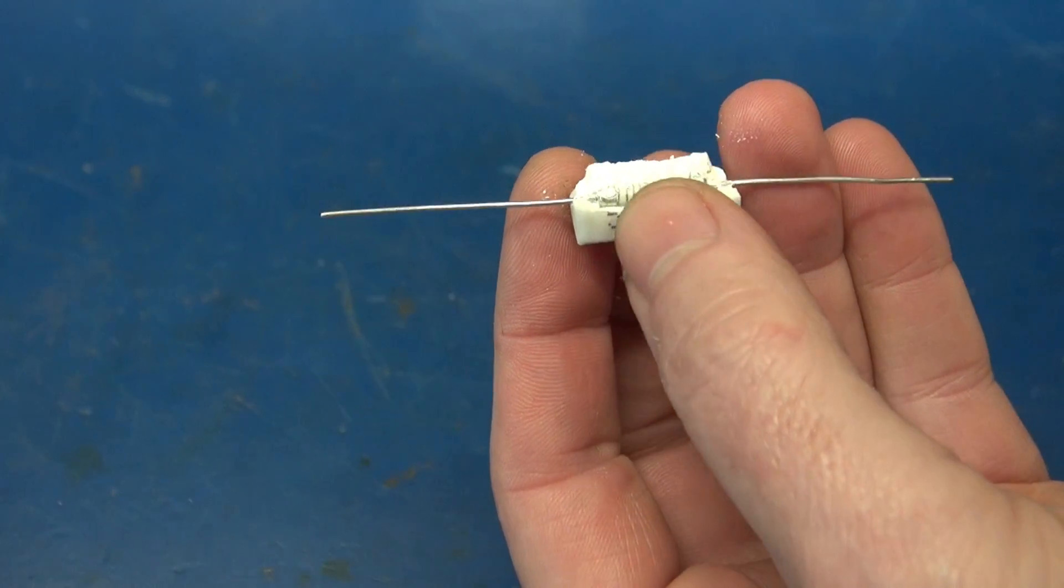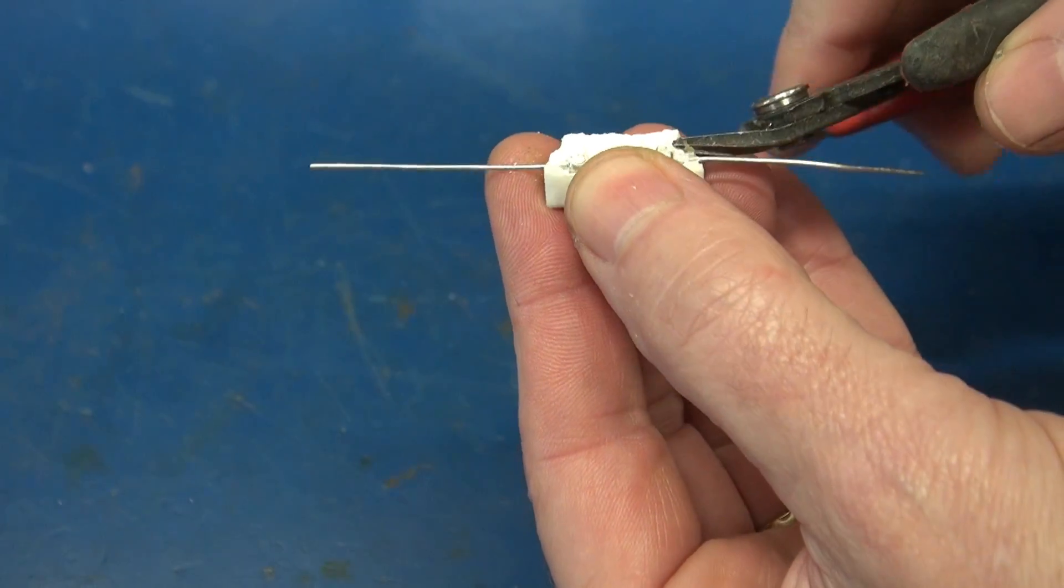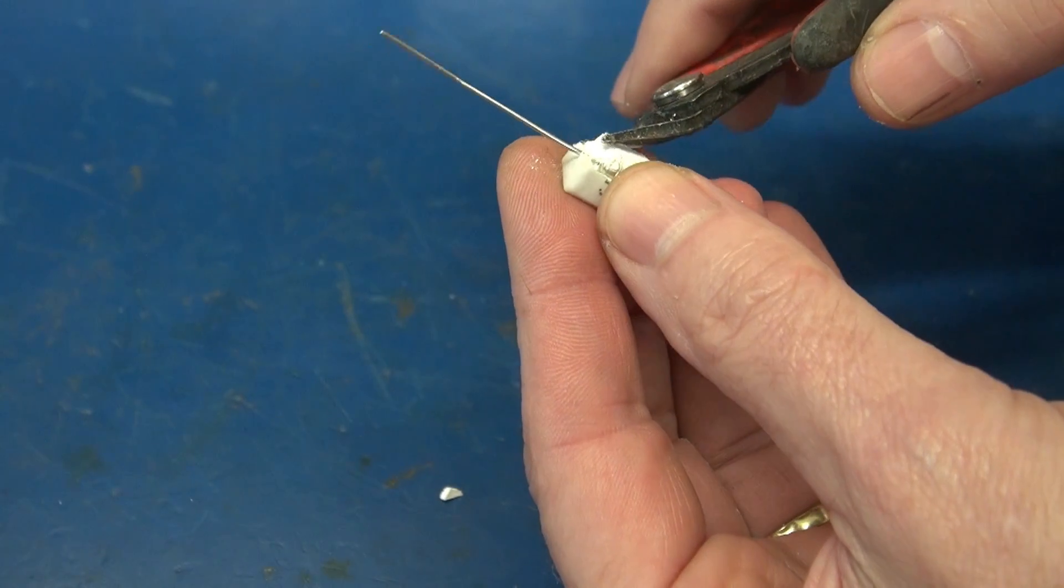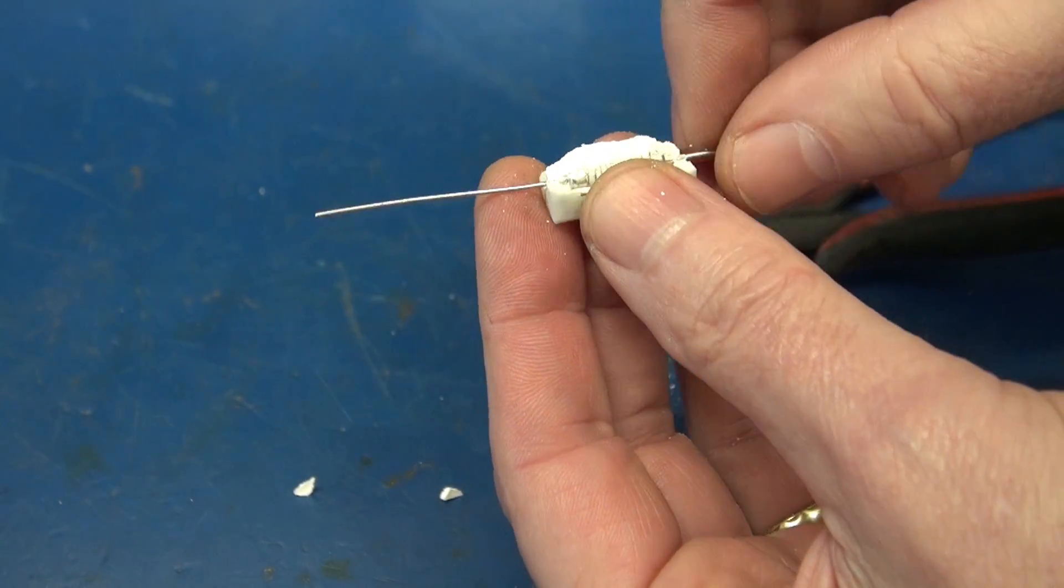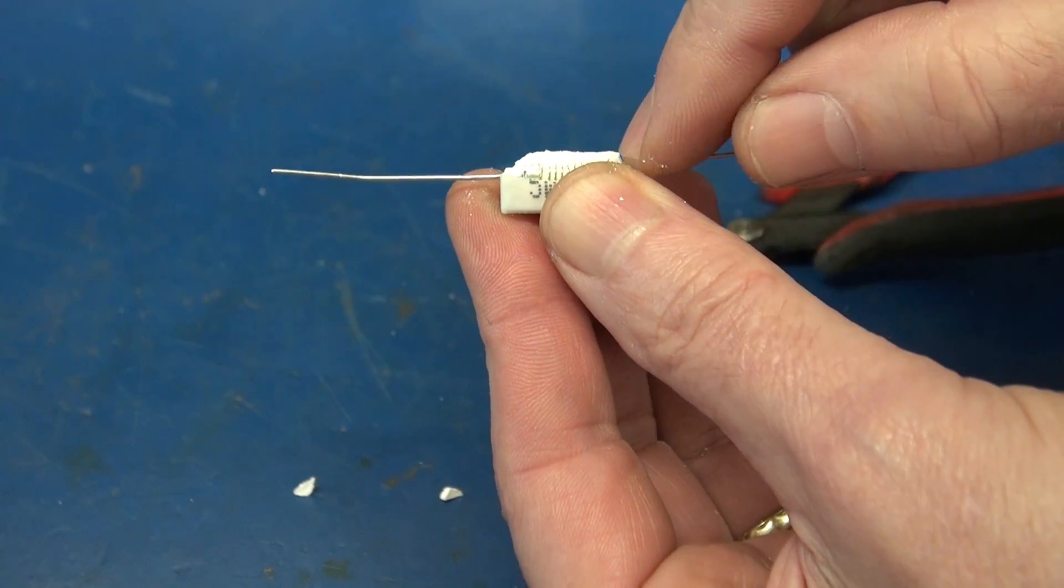So once you've split the case in half, take a pair of wire cutters or some other tooling, and carefully remove this potting compound until you get this wire wound element out.